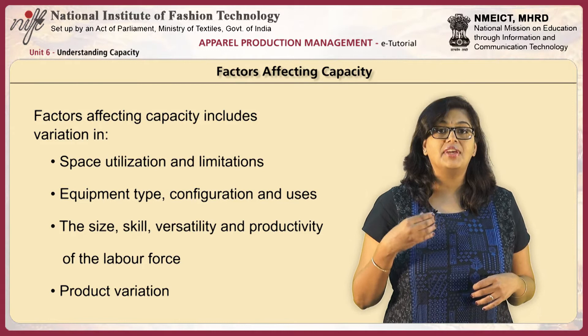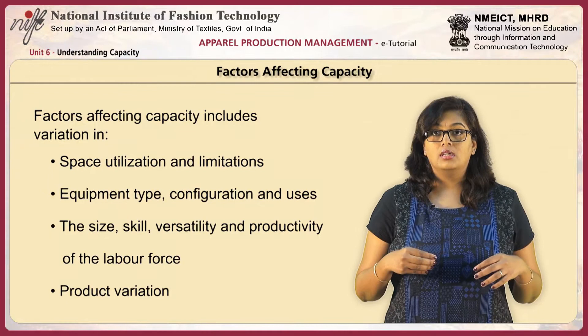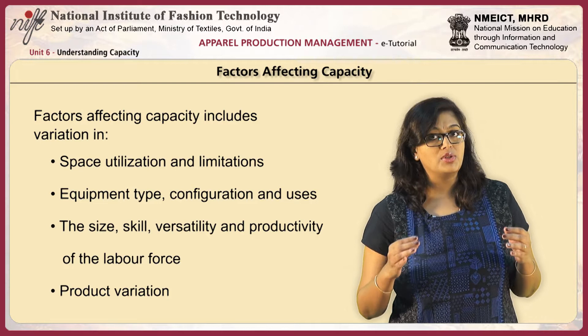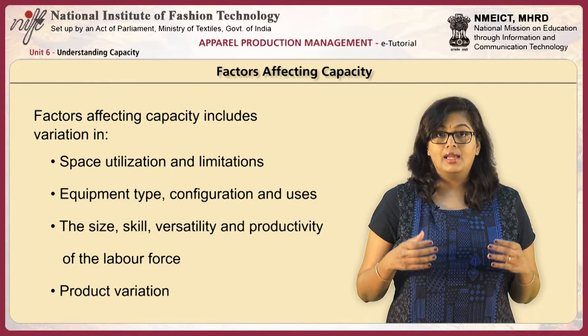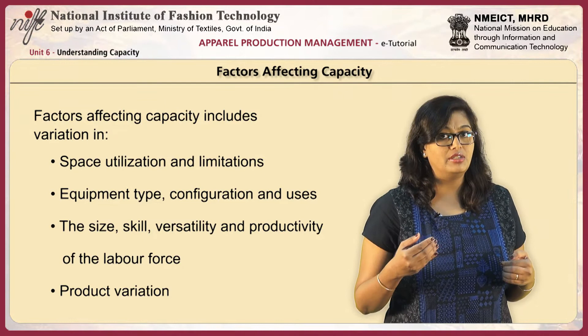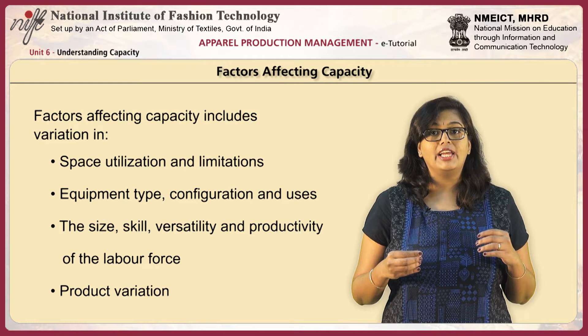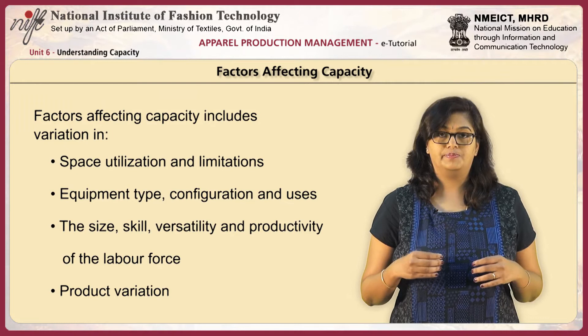Let us try to understand the various factors that affect capacity. Any changes in the following factors will automatically determine the capacity of the company. The first and most important is space utilization and limitations. It tells us what is the availability of space, how much machinery can be used in that space, and how well the space is being utilized. It also defines what limitations stop us from creating extra machines.